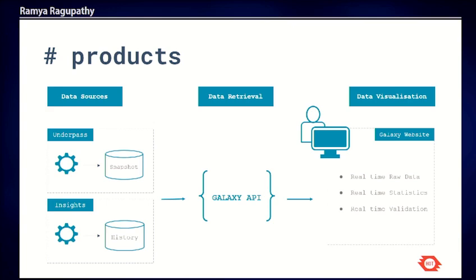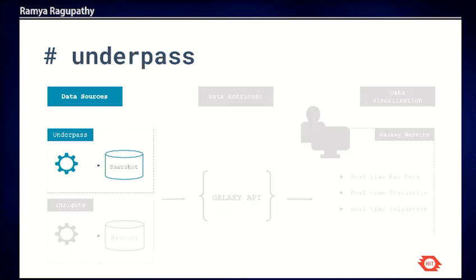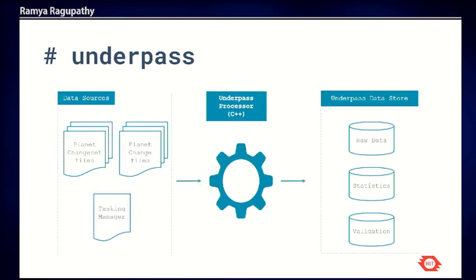What are the set of tools we have for Galaxy? To increase accessibility and ease of use, the first step is to build our own data source. As part of Galaxy, we are building a data source called Underpass, focused on the current snapshot of OSM, and a historical database called Insights. There is also a backend piece that talks to these data sources, and finally a website to visualize all the captured data.